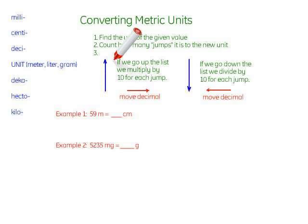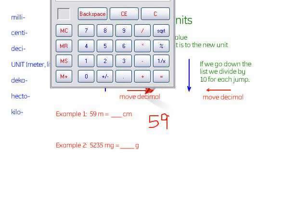We're going up so that means we need to multiply by 10 for each jump. Now multiplying by 10, we could take 59 and multiply it by 10 twice. Let's just do that for the fun of it here.